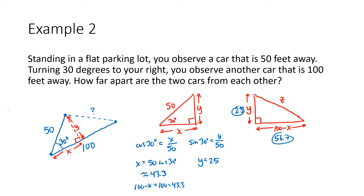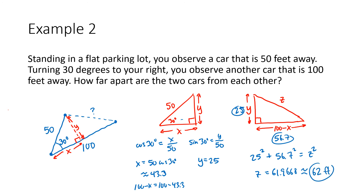We don't know any angles of the second triangle, so instead of trigonometry we use the Pythagorean theorem: 25 squared plus 56.7 squared equals z squared. This gives z approximately 61.97, which is approximately 62 feet. The approach required drawing an extra line to create a right triangle, but otherwise used similar techniques. Keep in mind it doesn't always have to be trigonometry — here we ended up using the Pythagorean theorem because we knew two sides but no angles.